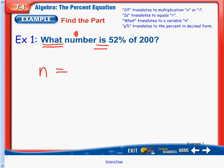Is, is equals, so I have n equals 52%. Percent sign tells me I need to draw that decimal, move it 2 to the left. And so now I have 0.52 of, means multiply, so times 200.